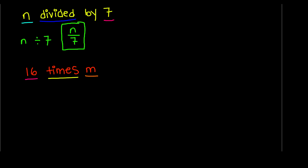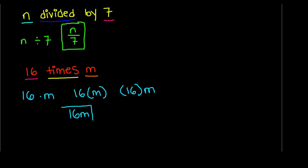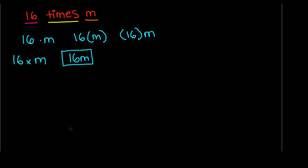There are various ways we can write this. We can write it as 16 dot m, as 16(m), or as (16)m. But the most preferable representation is just 16 and m written together. Some of you might wonder why we don't write the multiplication sign — an x — because it makes it confusing since people might think the x is also a variable. That's why we write 16m to show we're multiplying them together.